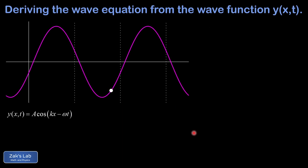Next we investigate x derivatives of the wave function. We freeze the wave at a single moment in time, holding time constant, and differentiate with respect to x. Taking the first partial derivative del y del x, the derivative of cosine produces a negative sine, and the chain rule produces a factor of k. So we end up with negative ka sine kx minus omega t. The interpretation of that is the slope of the string at that particular location at this particular time.